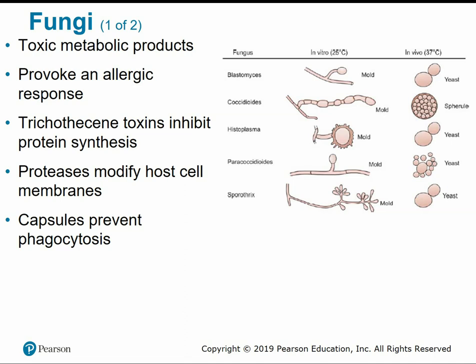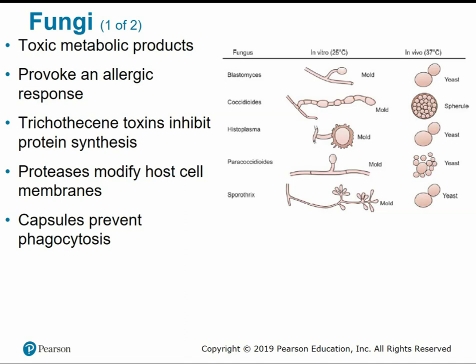Other microbes besides bacteria and viruses can also be pathogenic. Fungi mainly produce infection through toxic metabolic products, inhibiting protein synthesis, inducing allergic reactions, or modifying host cell membranes. Some fungi can have capsules to prevent phagocytosis, just as some bacteria do.